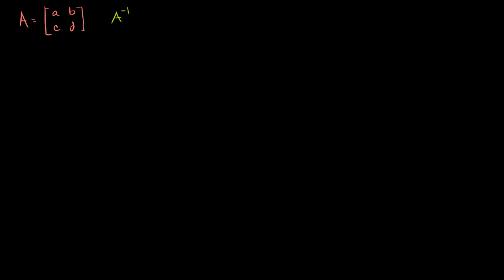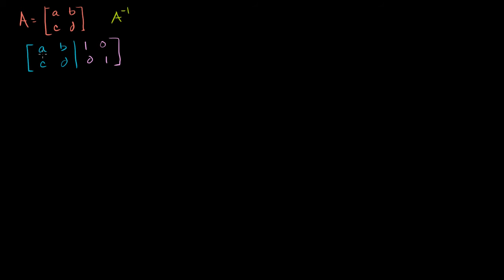We know a technique: we just create an augmented matrix. So we have A, B, C, D and we augment it with the identity in R2, so 1, 0, 0, 1. We know that if we perform a series of row operations on this augmented matrix to get the left-hand side into reduced row echelon form, and if that form reaches the identity, then the right-hand side is going to be the inverse. Let's do it in this general case.